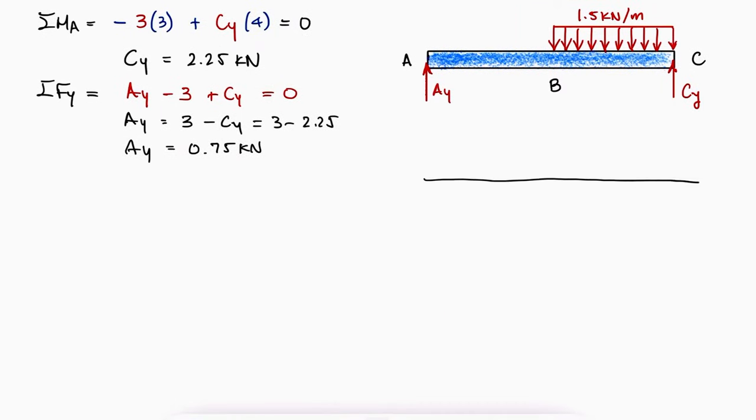The shear diagram with an x-axis in meters and a y-axis in kN would go up by 0.75 at A, maintain that value till B...